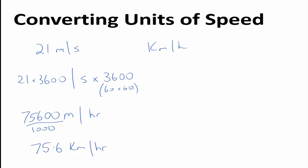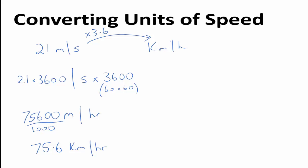So in reality, if you want to convert from metres per second to kilometres per hour, all you need to do is multiply by the magic number, 3.6, and you will end up with that conversion.